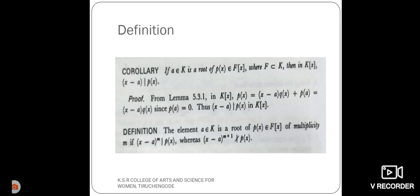Now see the statement of corollary. Let a be the element which belongs to the extension field K is the root of polynomial p of x which belongs to f of x, where f is contained in K. Then x minus a divides p of x.